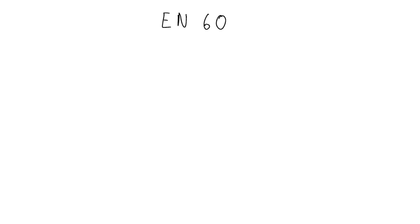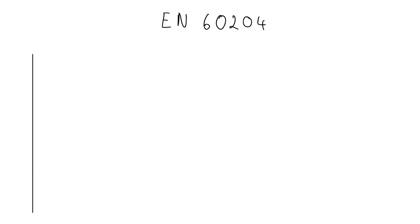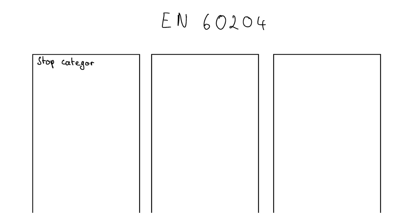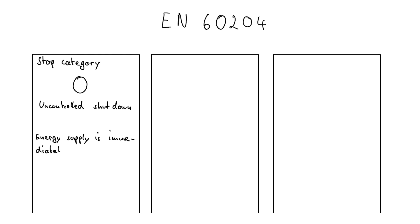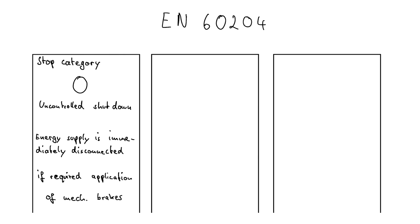It depends heavily on the application which safety function suits best. Our emergency shutdown safety relays work in accordance to EN 60204 with stop category zero. This means they shut down the power supply of an actor — for example, a drive — immediately.